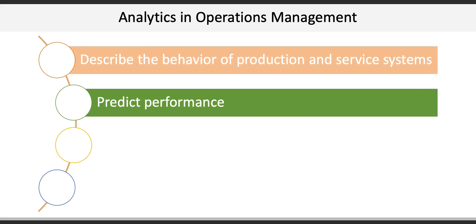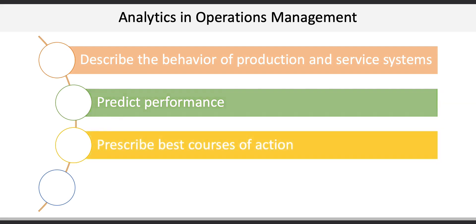Analytics can help us make decisions and predict best courses of action. A great example of this is how Starbucks relies on automated scheduling systems to recommend optimal staffing schedules while considering staff availability, maximum allowable hours, and probably even weather.